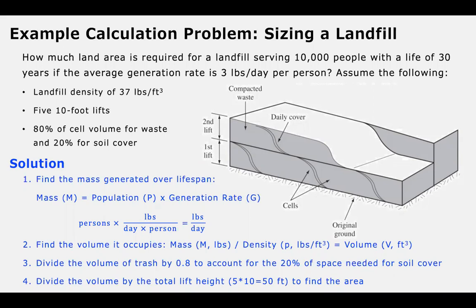In step two, we're going to take the mass of waste produced over the 30 years and determine what volume it occupies using the density of 37 pounds per cubic feet. That'll give us the volume in cubic feet, which we then divide by 0.8 to account for the fact that 20% of the space is needed for soil cover. Then we divide that by the total lift height in order to find the area, or an approximation of the footprint of this landfill — at least the portion associated with the cells.